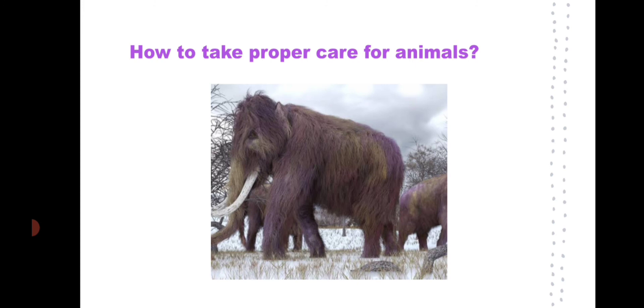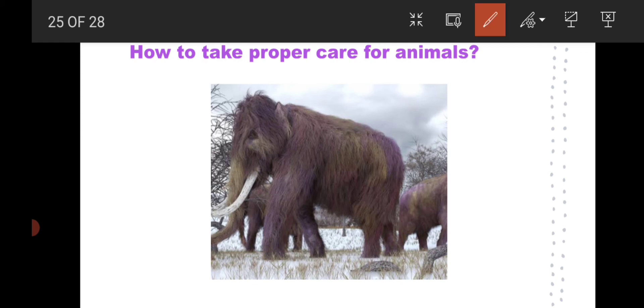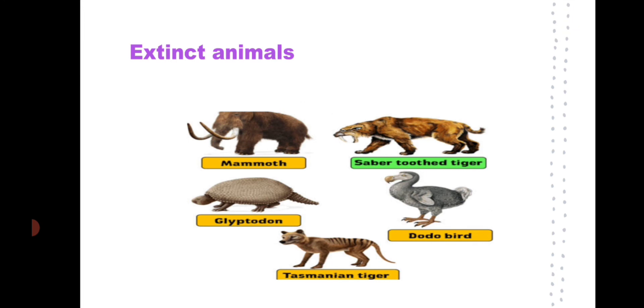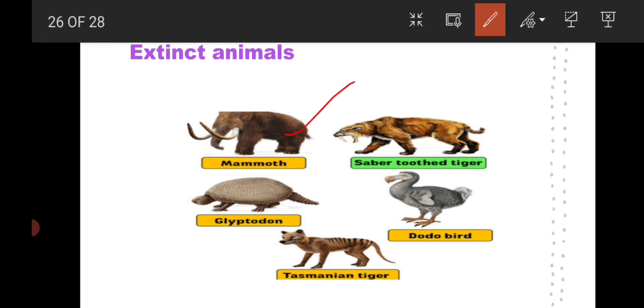Why do we need to take proper care of animals? The mammoth, which was like an elephant, is now extinct — due to extreme climates and hunting, it became extinct about 10,000 years ago. Other extinct animals include the mammoth, saber-tooth tiger, glyptodon, dodo bird, and Tasmanian tiger. Not even a single organism of these species remains today.